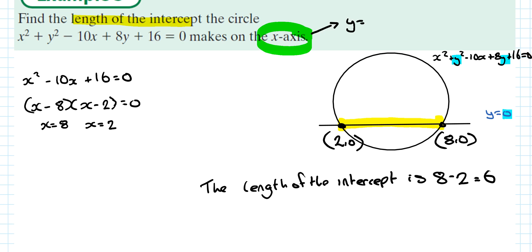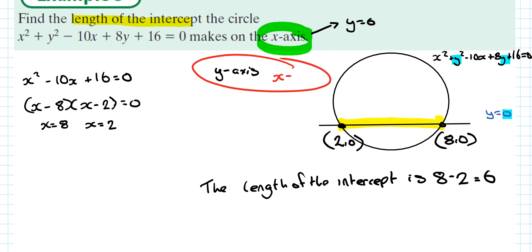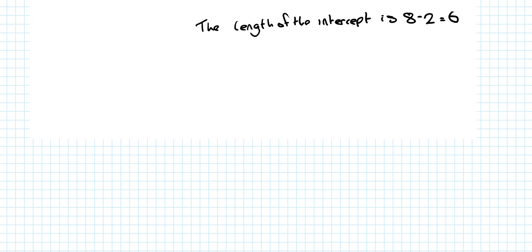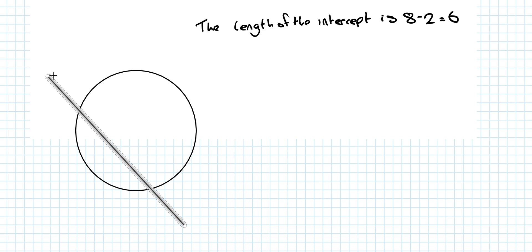If it hits the x-axis the equation is y = 0; for the y-axis the equation is x = 0. Similarly, if they give you a circle and a non-axis line and ask for the length of the intercept, you would first find the two points A and B using the simultaneous equations method from the earlier questions, then use the distance formula to find the length between them.